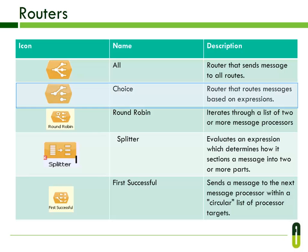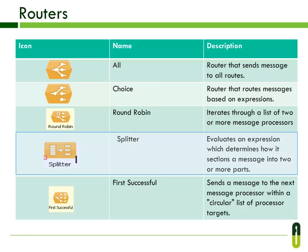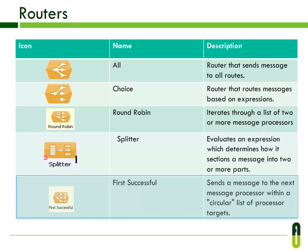The Choice router sends a message to the first message processor that matches, routing messages based on expressions. Round Robin iterates through a list of two or more message processors, sending successive messages to the next processor on the list; when it reaches the end, it jumps back to the start. The Splitter evaluates an expression to section a message into two or more parts and sends each part in sequence to the next message processor. First Successful sends a message to the next processor within a circular list of processor targets.